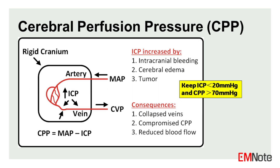In ICP monitoring, ventricular fluid pressures are recorded from a zero baseline. The normal range is 0 to 15 mmHg. Pressures are expressed in mmHg rather than mmH2O to facilitate comparison with mean systemic arterial pressures. The difference between mean ventricular pressure (ICP) and mean arterial pressure (MAP) indicates the pressure at which the brain is being perfused with blood, known as CPP.